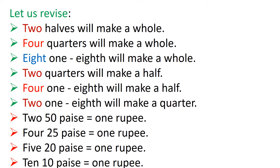2 halves will make a whole. 4 quarters will make a whole. 8 one-eighths will make a whole. 2 quarters will make a half. 4 one-eighths will make a half. 2 one-eighths will make a quarter. 2 fifty-paise will be equal to 1 rupee. 4 twenty-five paise will be equal to 1 rupee. 5 twenty paise will be equal to 1 rupee. And 10 ten-paise will be equal to 1 rupee.